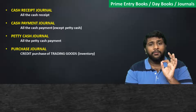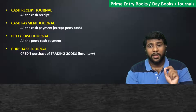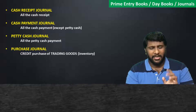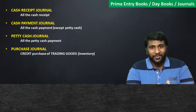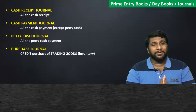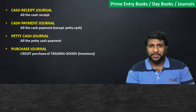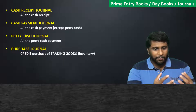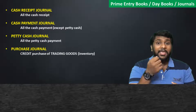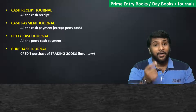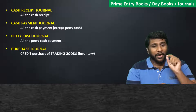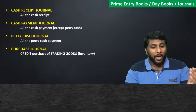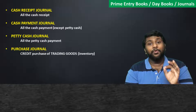In purchases, there will be purchases of trading goods and purchases of other assets. What you have to remember is that in the purchase journal we record only trading good purchases. Other asset purchases are ignored here. When it comes to trading good purchases, there are two types: cash purchase and credit purchase. If you purchase a trading good by paying cash, your cash is going out, so it should be recorded in the cash payment journal.